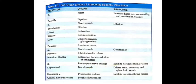Beta-1 adrenergic receptor stimulation on end organs: stimulation of the heart causes increased heart rate, contractility, and conduction velocity; on fat cells it causes lipolysis. Beta-2 adrenergic receptor stimulation causes bronchiole dilation, uterine relaxation, renal renin secretion, hepatic gluconeogenesis and glycogenolysis, and pancreatic insulin secretion.